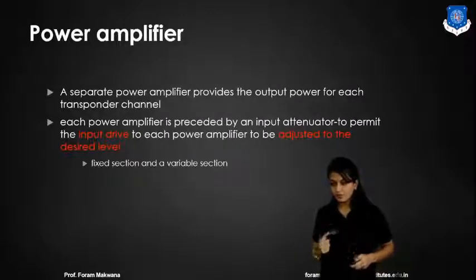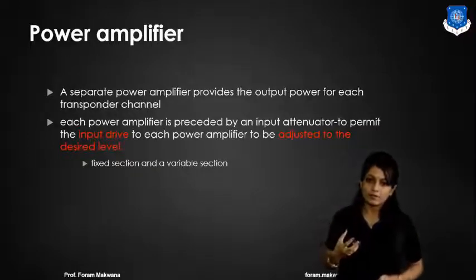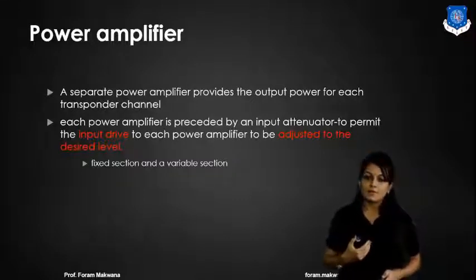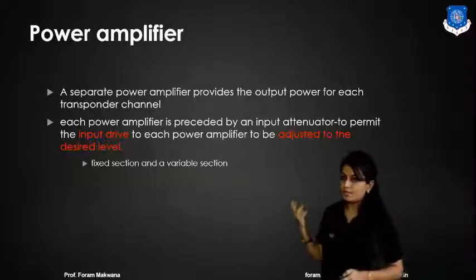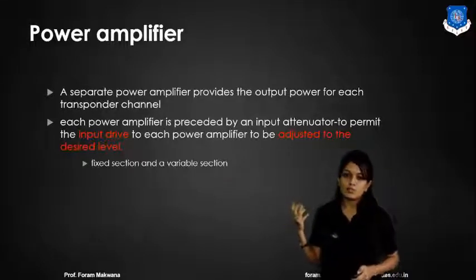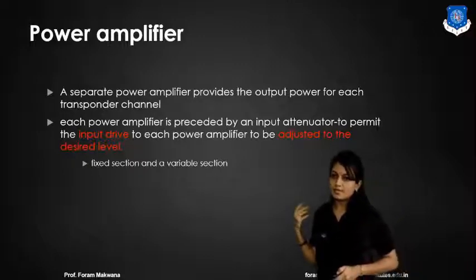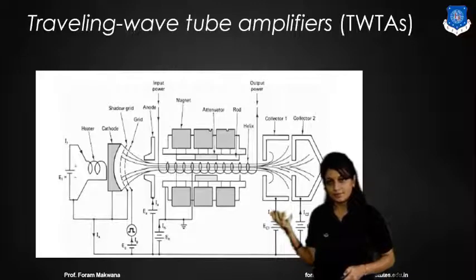What is the function of the power amplifier? A separate power amplifier provides the output power for each transponder channel. Each power amplifier is preceded by an input attenuator to provide the appropriate input drive to each power amplifier. This can consist of a fixed section and a variable section.